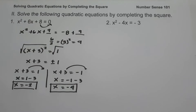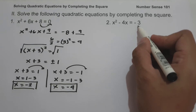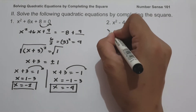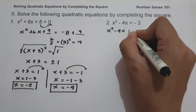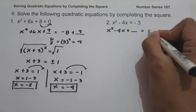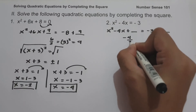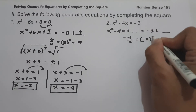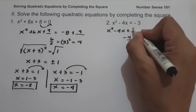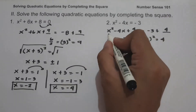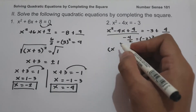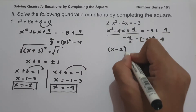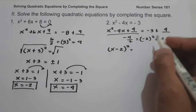On number 2, we have x squared minus 4x equals negative 3. The constant is already on the other side, so we make x squared minus 4x a perfect square trinomial by adding a number to both sides. We have negative 4 divided by 2, that is negative 2, and negative 2 squared is 4. So we add 4 to both sides. Factoring: x minus 2, quantity squared, equals negative 3 plus 4, which is 1.